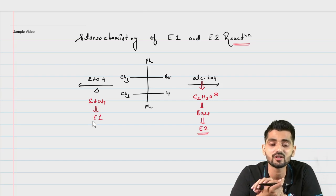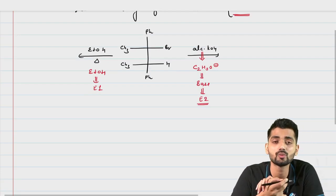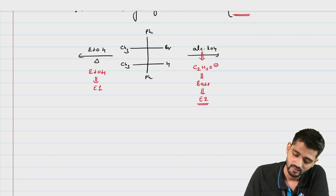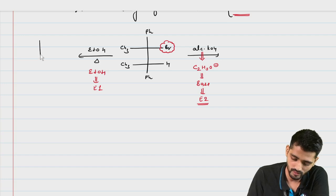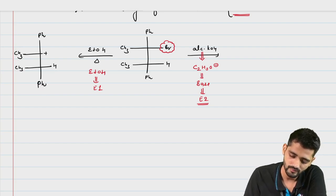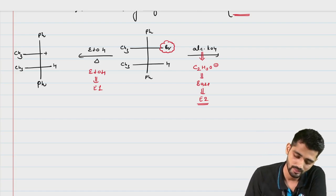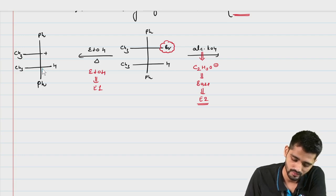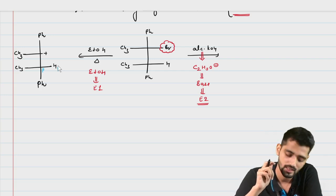Let's first see how E1 reaction leads to both the isomeric forms. E1 reaction proceeds via a carbocationic intermediate. The leaving group will leave and we will generate a carbocationic intermediate. The carbocation developed will be in the Fischer form — a carbocation at this center with CH3, hydrogen, and the phenyl group. Once we have developed the carbocation, we will be looking for the beta hydrogens to be extracted by the base. The beta hydrogen present for this system is on the beta carbon, and no other beta hydrogen is present for this carbocationic center.